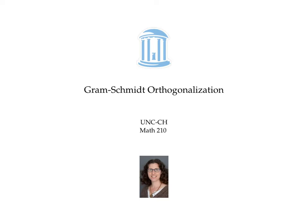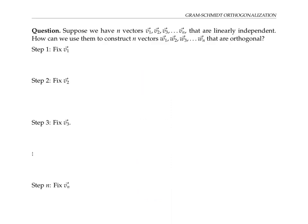This video gives an algorithm known as Gram-Schmidt, to convert a set of linearly independent vectors into a related set of orthogonal vectors. Suppose we have n vectors v1, v2, v3, all the way through vn, that are linearly independent. Recall that this means none of these vectors is a linear combination of the others. We want to construct n vectors w1 through wn that are orthogonal, meaning their dot product is zero. I'll show you an algorithm to do this.